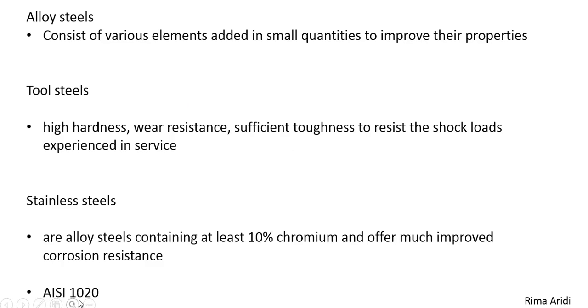Example here, AISI 1020. First digit indicates this is a plain carbon steel. The second digit means there are no alloying elements. Last two digits, 20, indicates that the steel contains approximately 0.2% carbon.